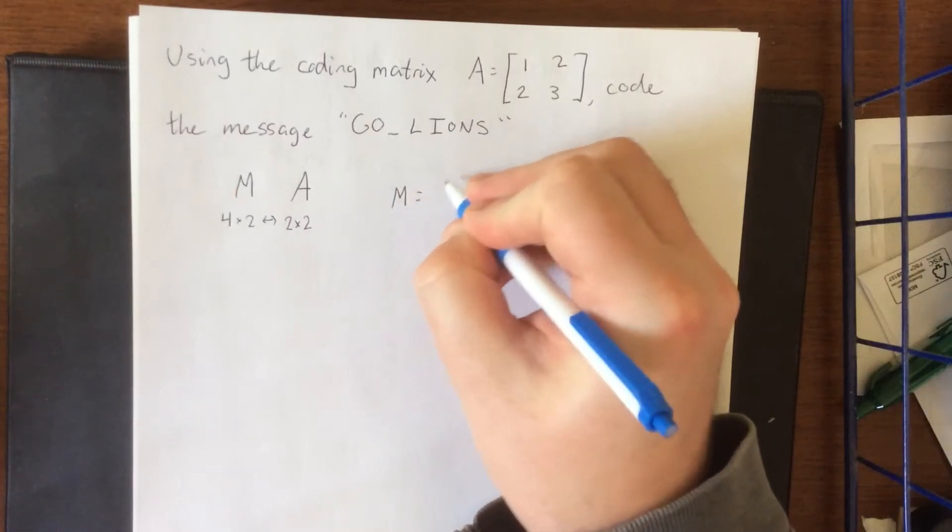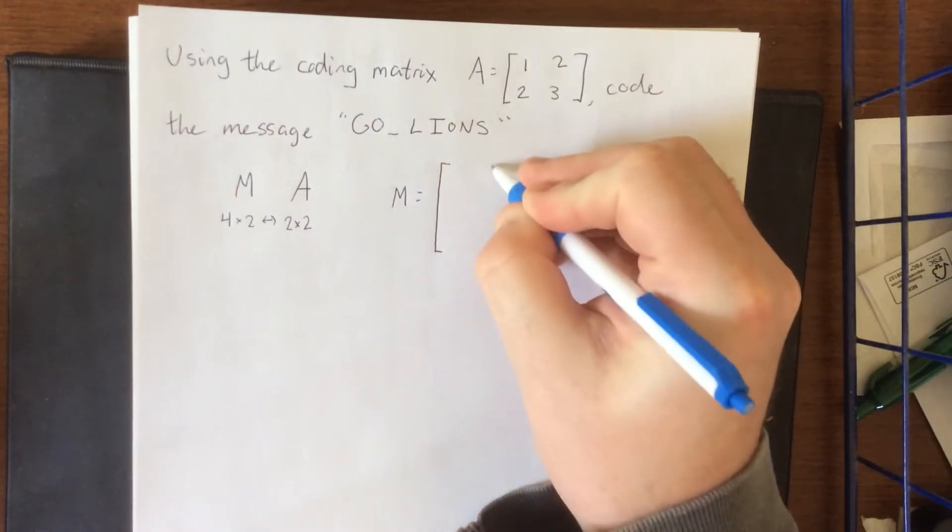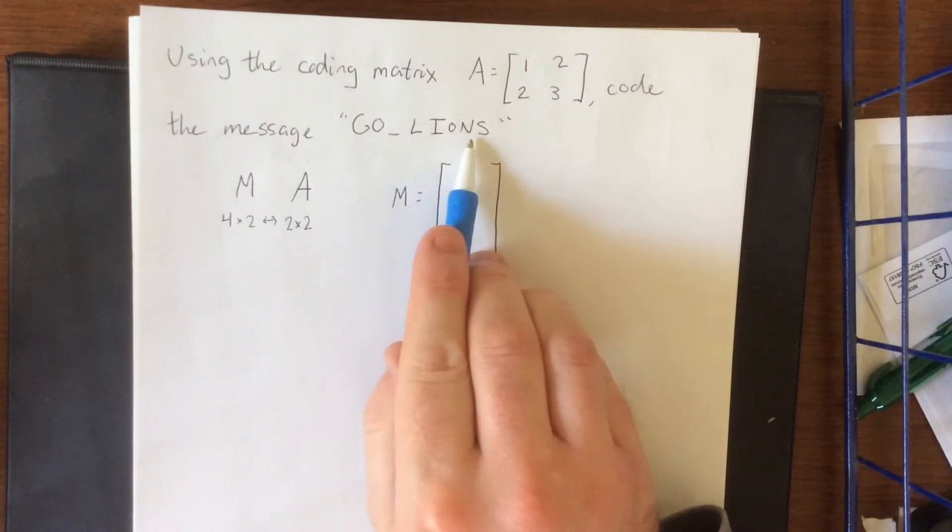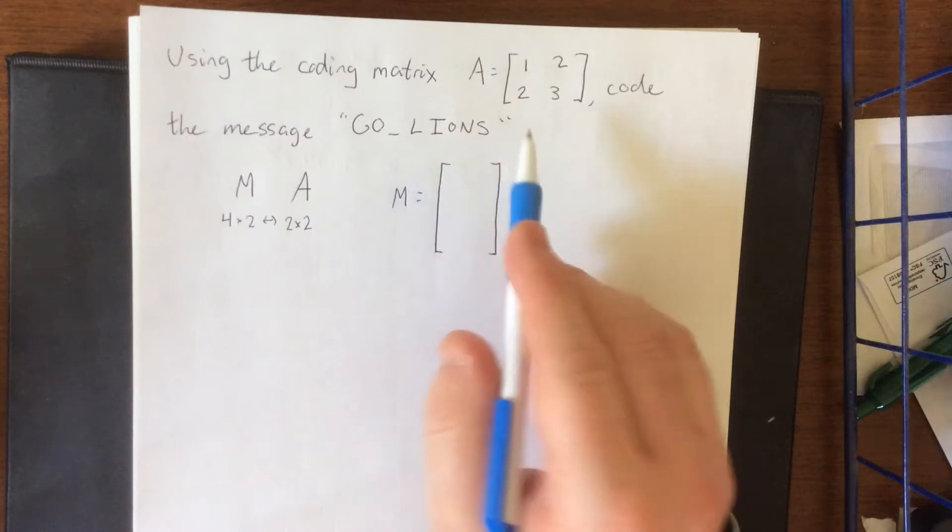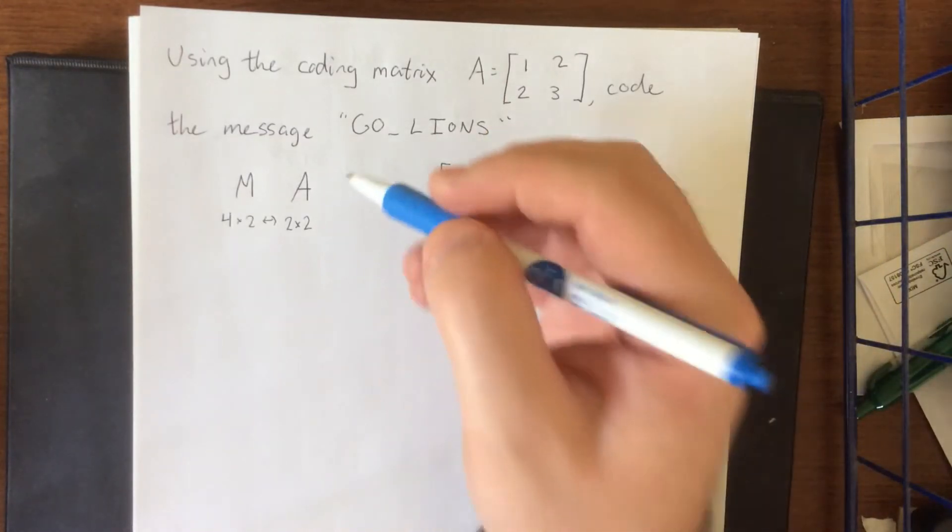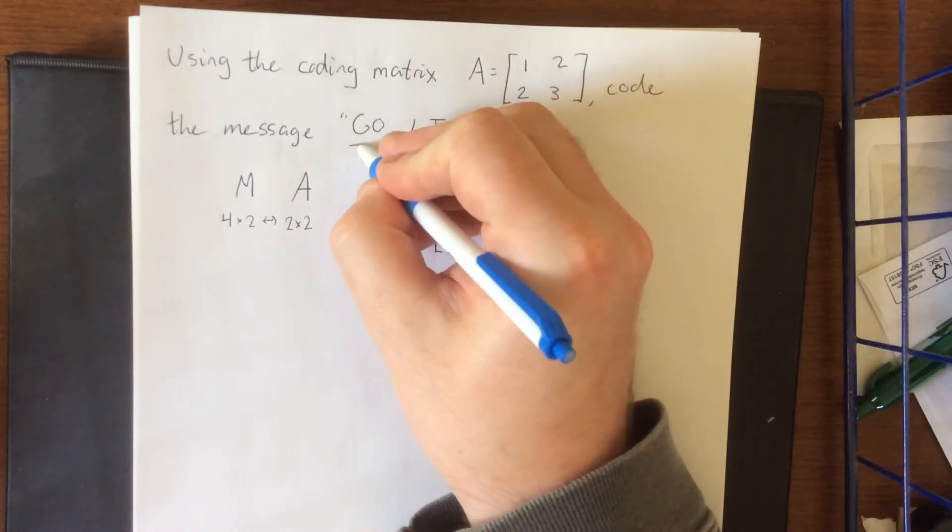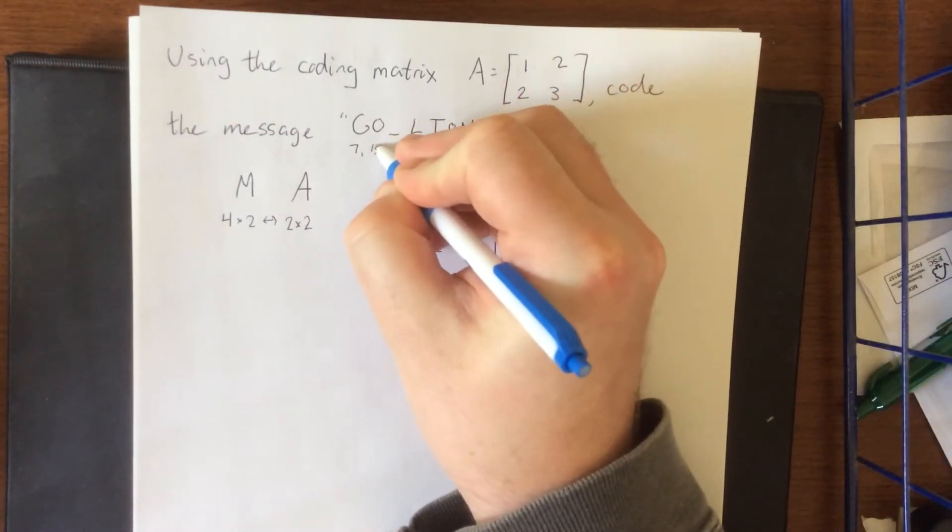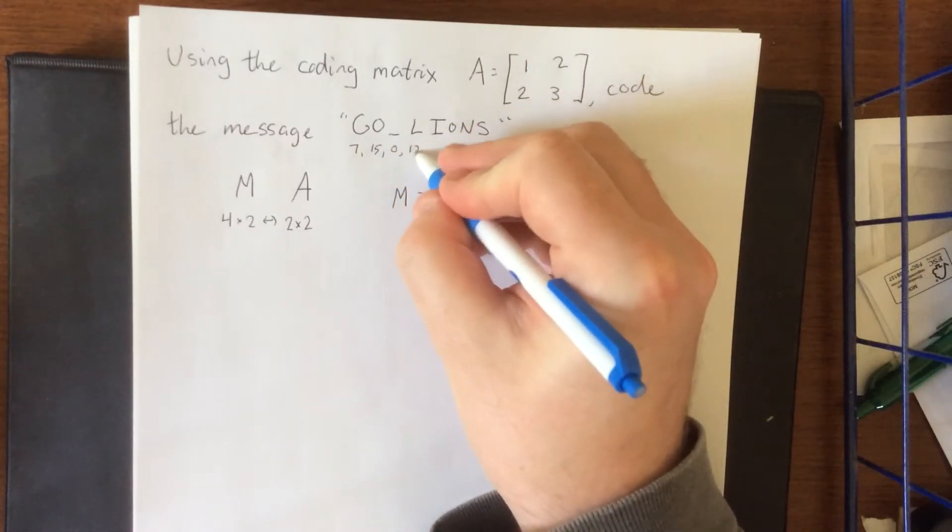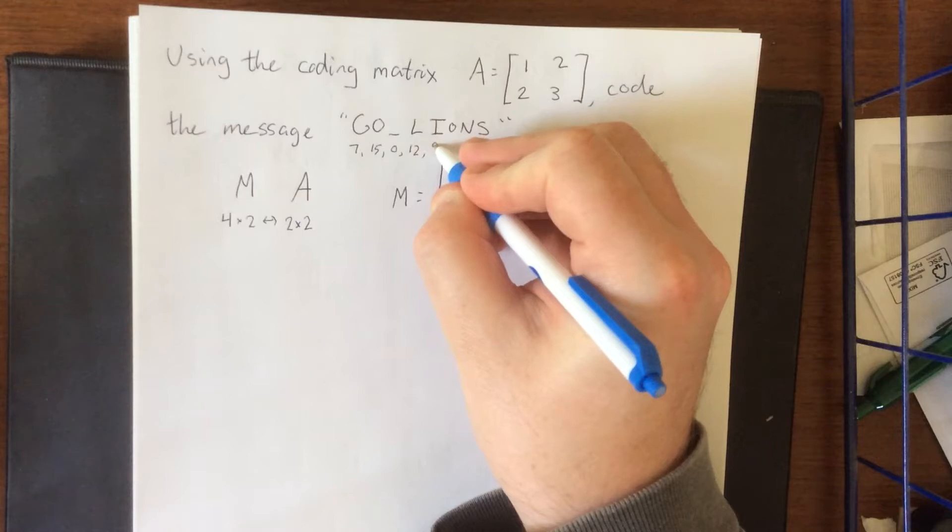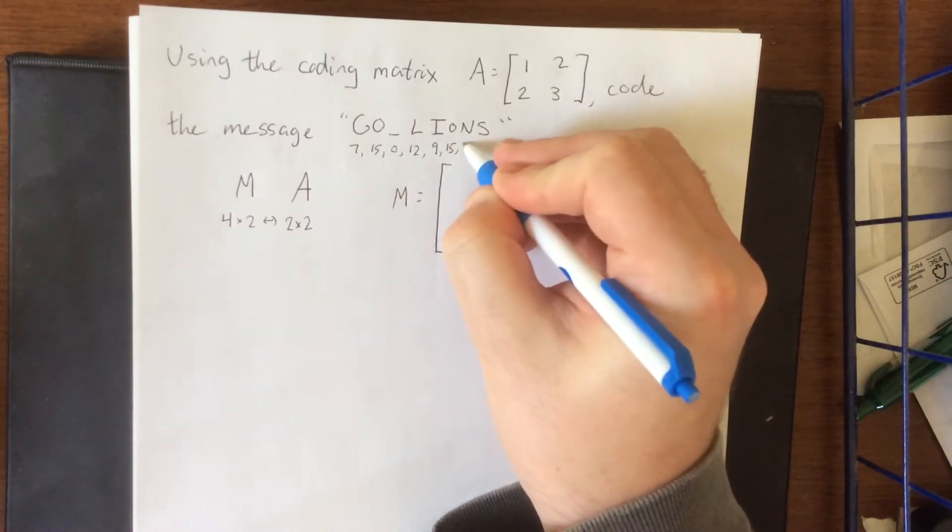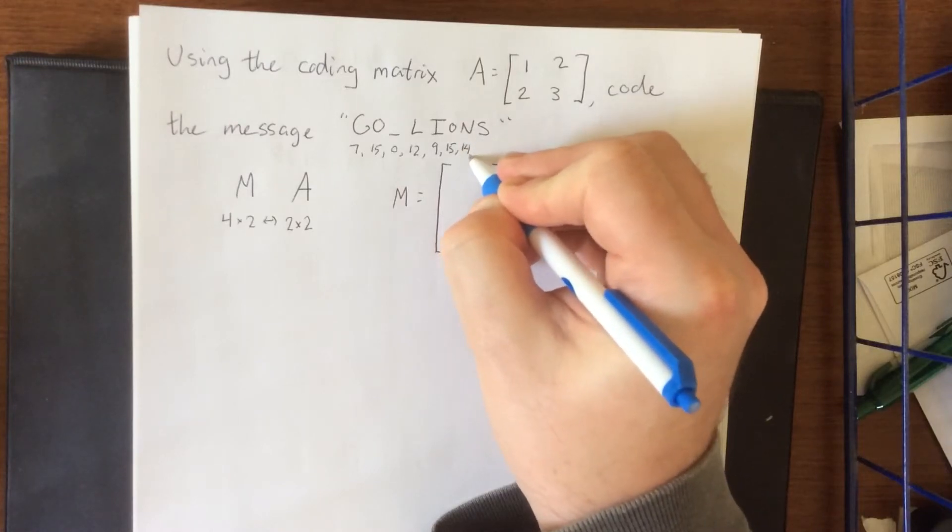So for our message matrix when we create this 4x2 we'll need to take each of these symbols and translate it from letter into number. So this will be based on what number in the alphabet it is. So G is the seventh letter, O is the fifteenth letter, space we'll use a zero for that, L is the twelfth letter of the alphabet, I is the ninth letter of the alphabet, O is once again 15, N is 14, and S is 19.